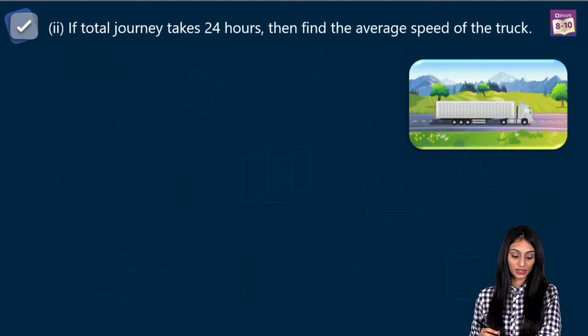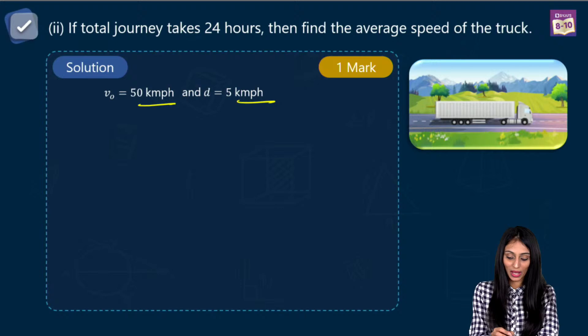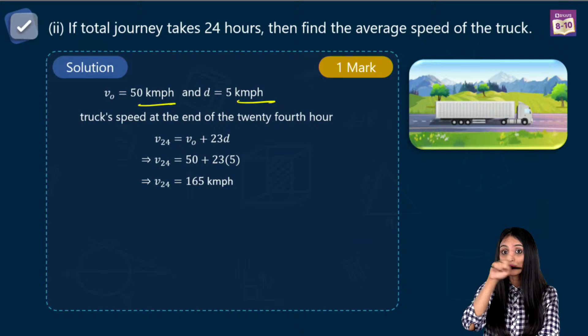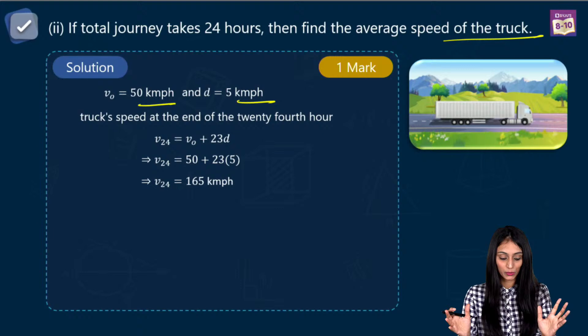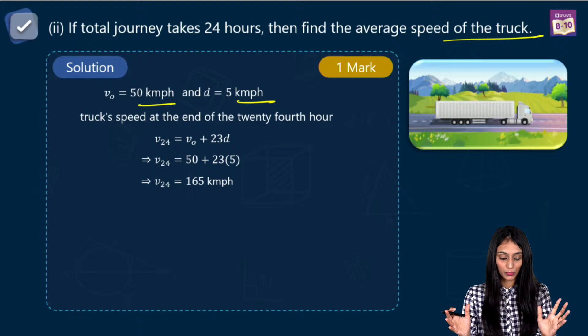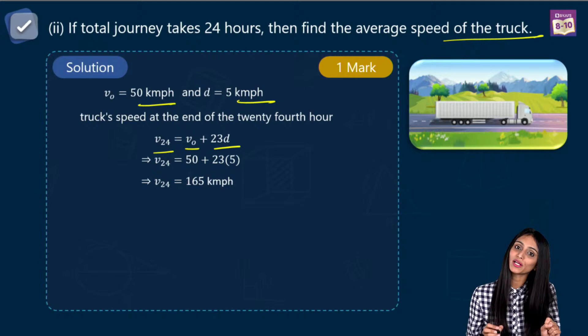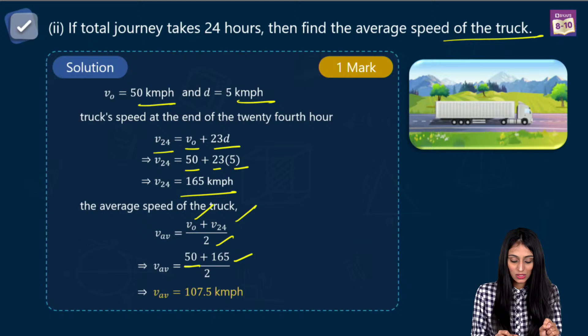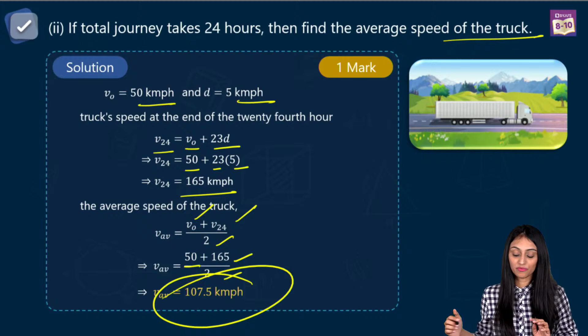Second part: if the total journey takes 24 hours, find the average speed of the truck. The speed at the end of the 24th hour is V-naught plus 23D, which is 50 plus 23 times 5, giving 165 km/h. Average speed is initial plus final divided by 2: 50 plus 165 divided by 2 equals 107.5 kilometers per hour.